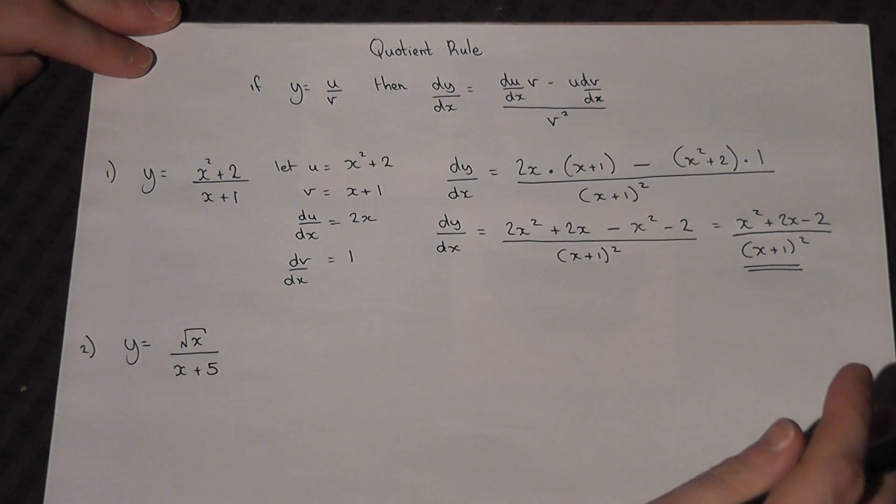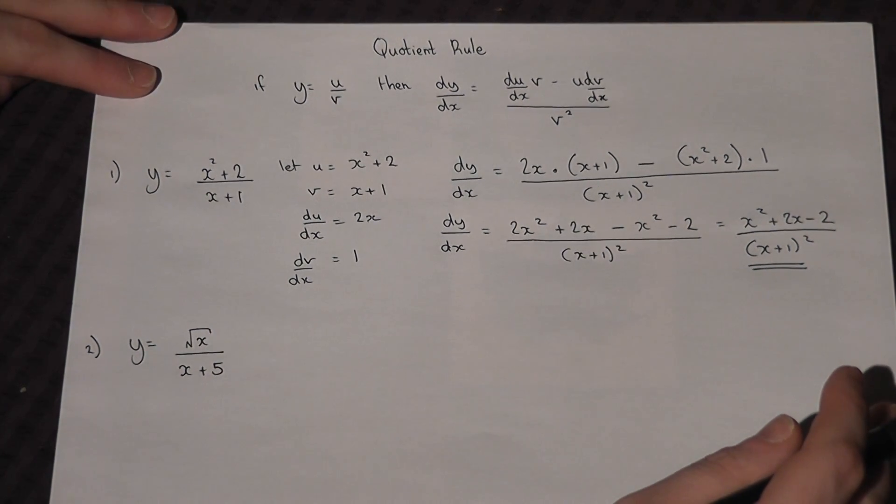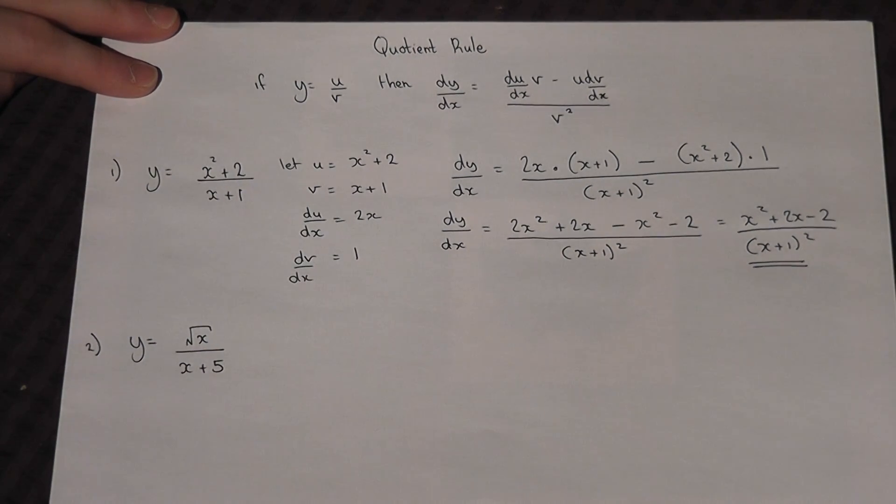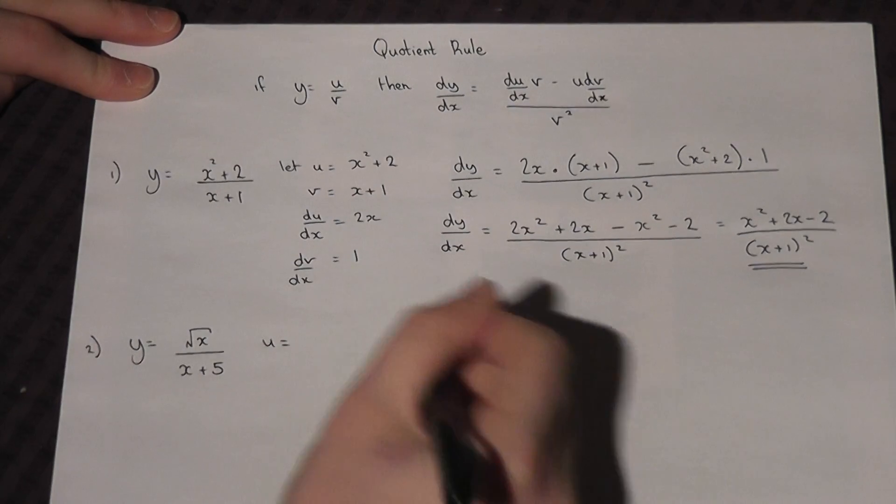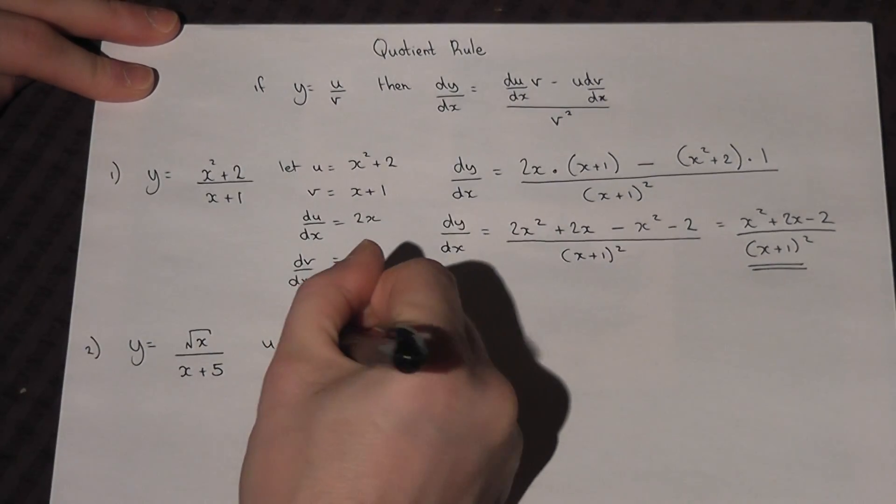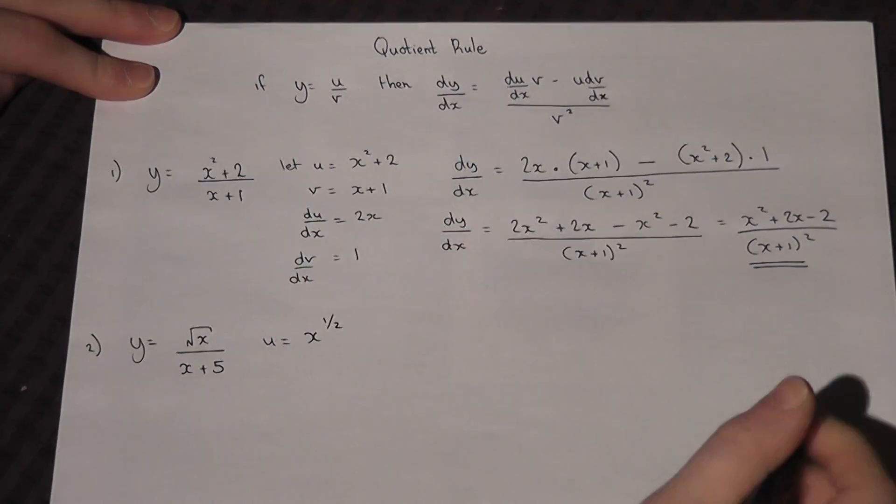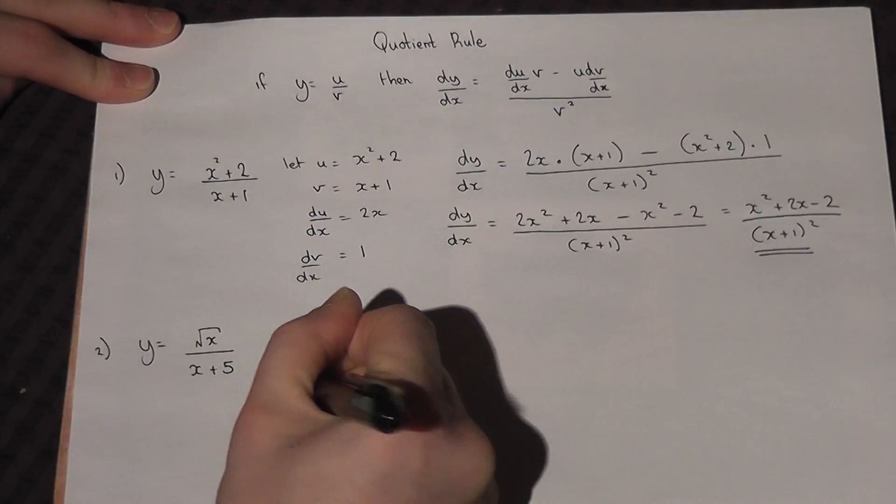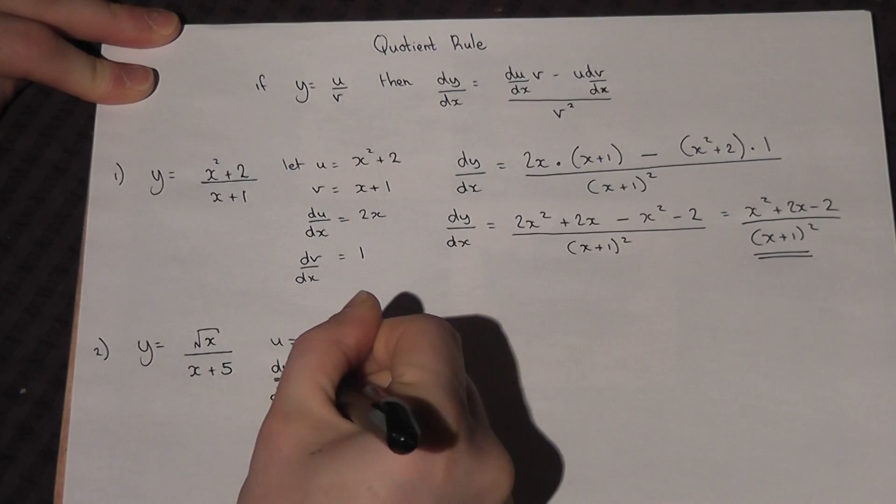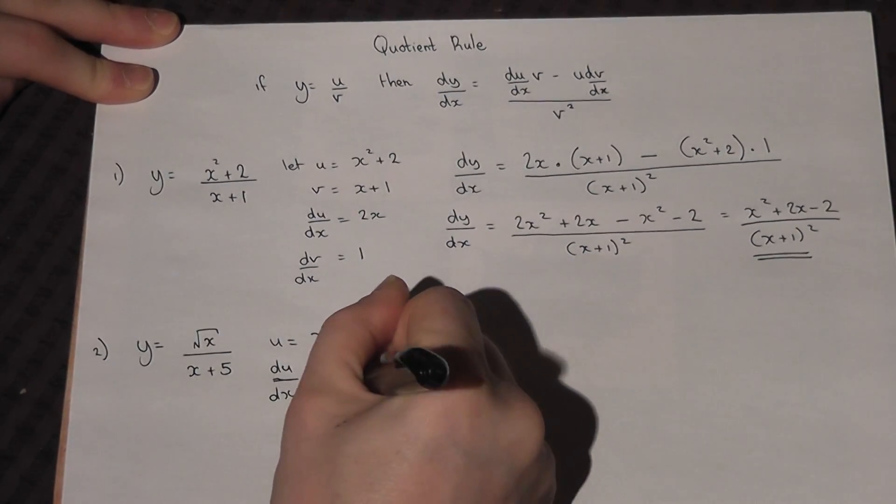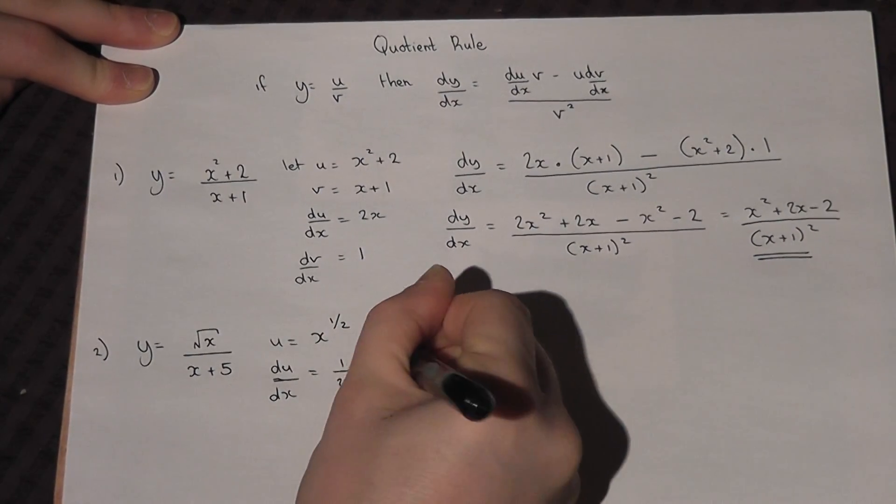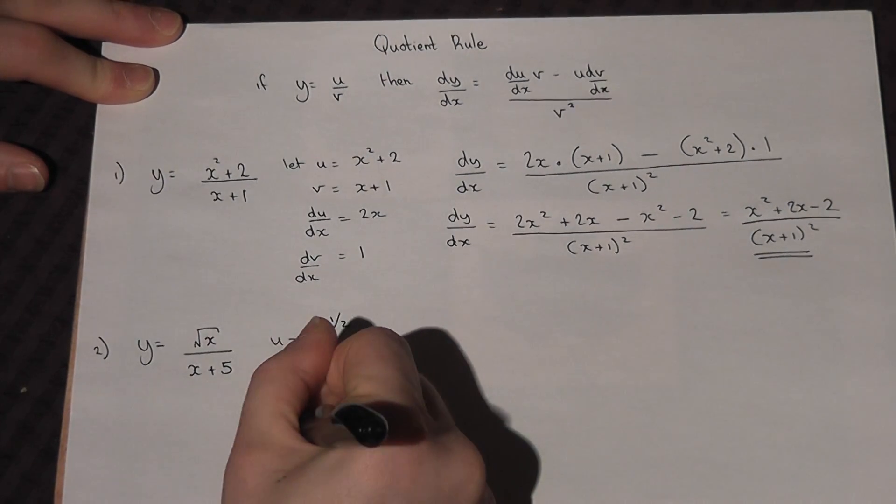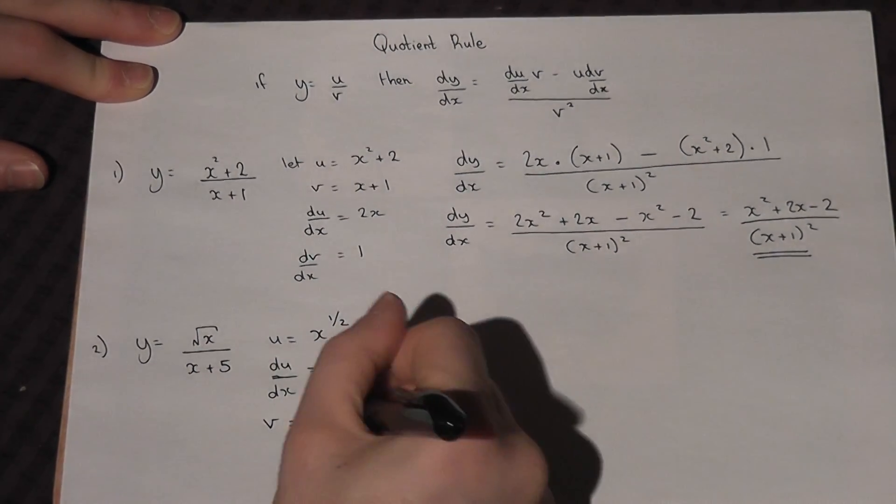The second one, then, it's a bit more complicated, a bit more to it, but we have u and v. So u is equal to root of x, which I'll write as x to the power of the half. I'll now work out du by dx, that will be a half x to the minus a half. Then v will equal x plus 5.